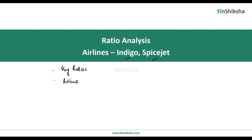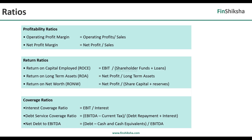All the data used has been picked up from publicly available sources — the annual reports of the two companies and the DGCA, which is the Director General of Civil Aviation website, which gives statistics about airlines. Let's first quickly have a recap of what ratios are and why we need them, and what kind of ratios we are going to look at.